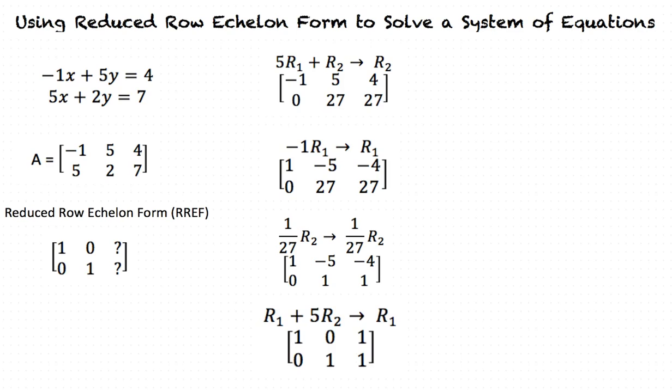This results in 1, 0, 1, row 2: 0, 1, 1.